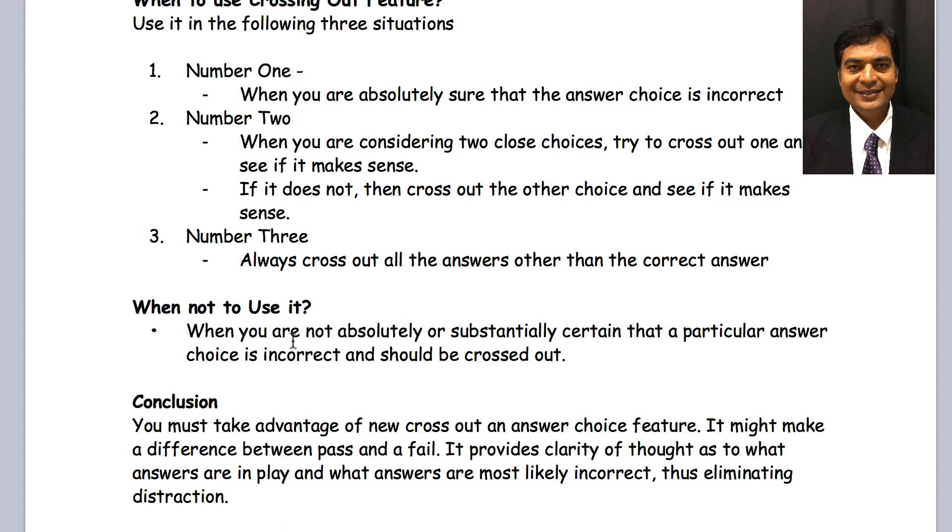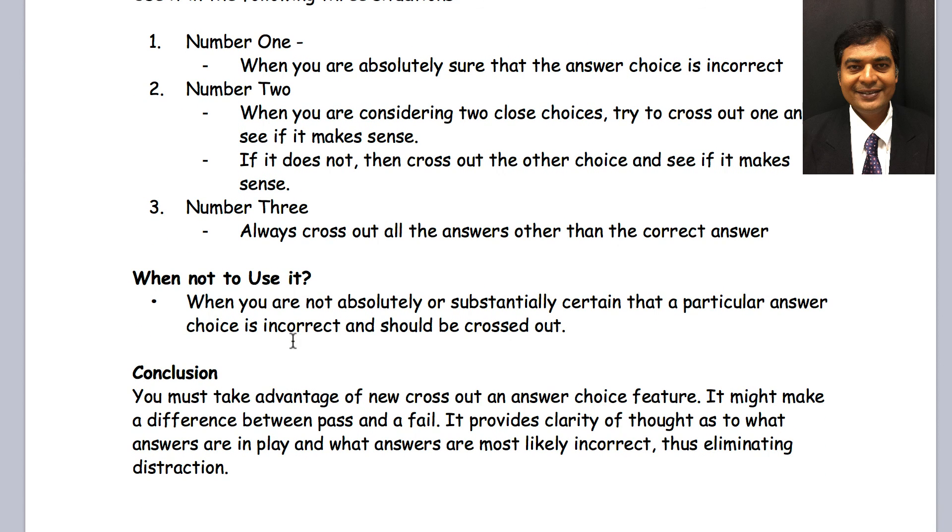Now, when do I recommend not to use it? When you are not absolutely or substantially certain that this is an incorrect choice. If you are doubting it, if you are less than 75% sure, then you got to leave it in play. Because you may run into another question which will then give you answer to that, or you may look up MPEP later on in your exam session and that may help you find the answer. If you cross it out half-heartedly, then you're less likely to search for it and make that an answer. So, be careful there.